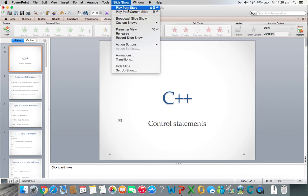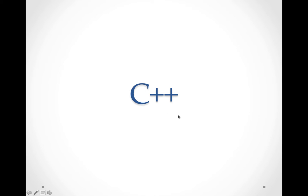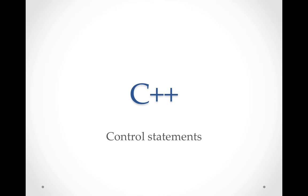Welcome. We started with C++ and completed a number of theory topics in C++ programming. I hope you are going through the sequential link of the videos. Next, we are moving to the next step of C++, that is control statements. What is the meaning of control statements? First of all, the meaning of control is to control the C++ program, and for this we use control statements.